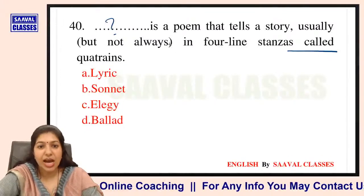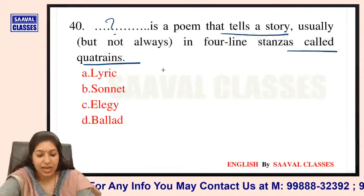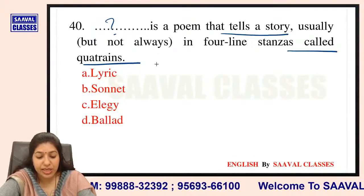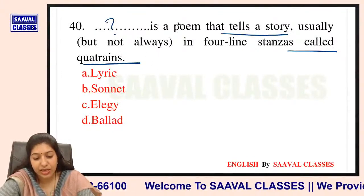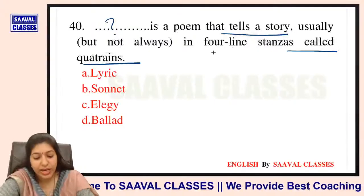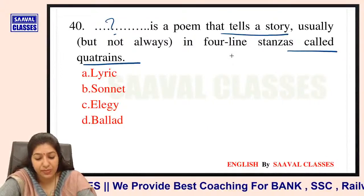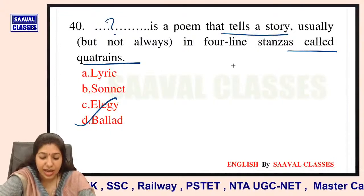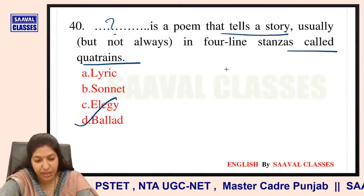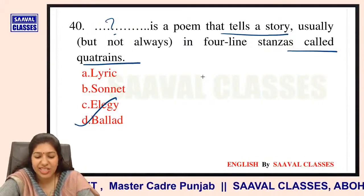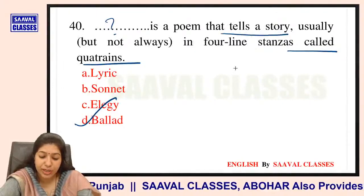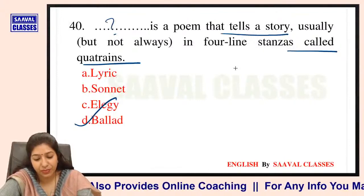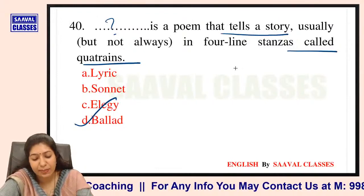Question number 40: Dash is a poem that tells a story, usually but not always in four-line stanzas called quatrains. Haan ji — yeh ek tarah ki poem hoti hai — the answer is ballad.